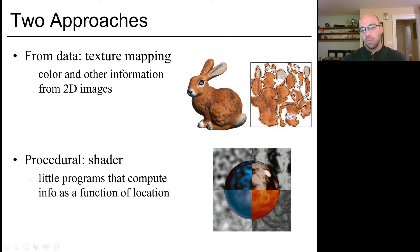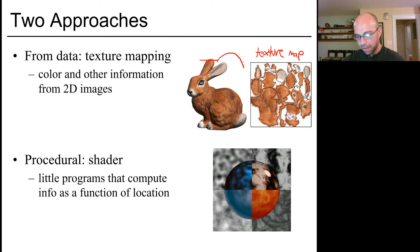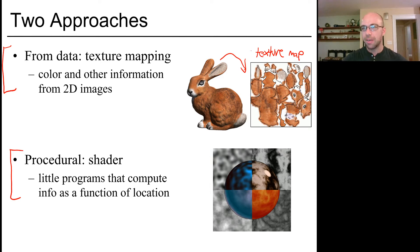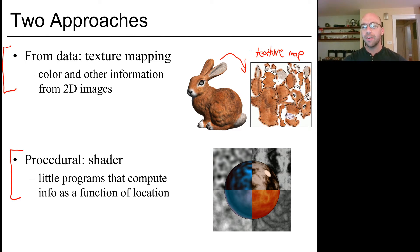We'll use two strategies. The first is to store texture in a two-dimensional image — a texture map — and store a mapping from triangle mesh vertices into that texture, keeping high-frequency information in the image while geometry remains low-frequency. The second is procedural shading: writing a small program that computes shading information as a function of location in space on the fly. In particular, we'll discuss Perlin noise, which has been impactful over the last 20–30 years for creating high-frequency textures without large storage requirements.